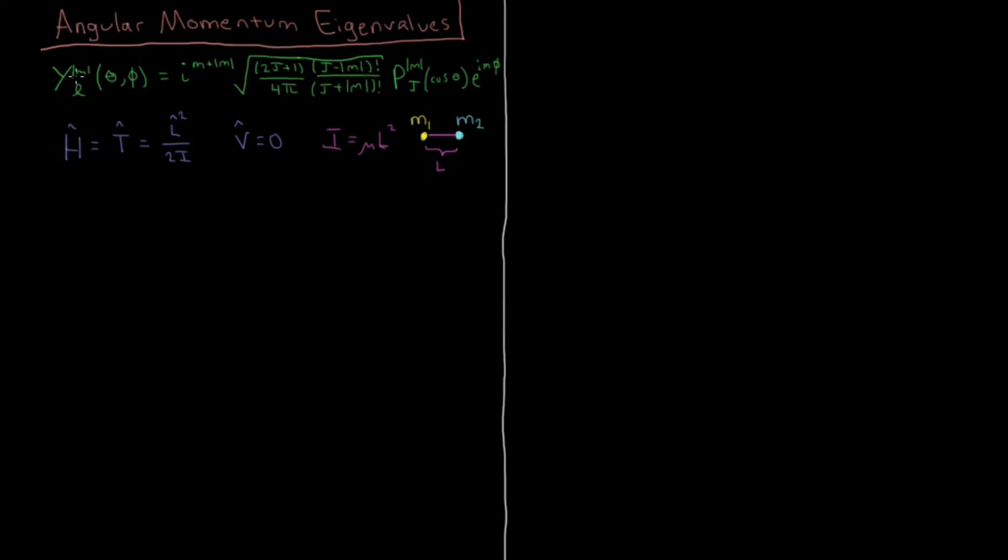So those wave functions are, as we saw, this very complicated normalization constant, i to the m plus absolute magnitude m times the square root of 2j plus 1 over 4pi